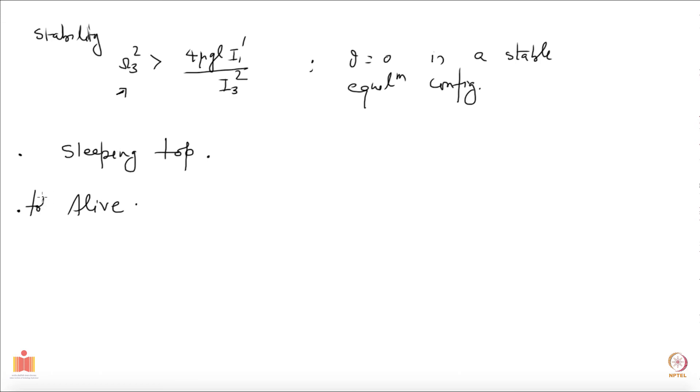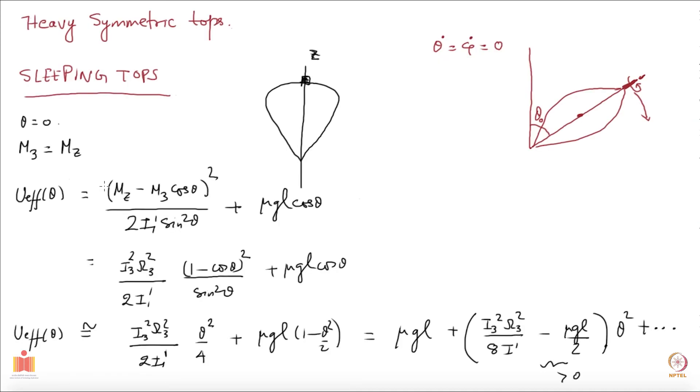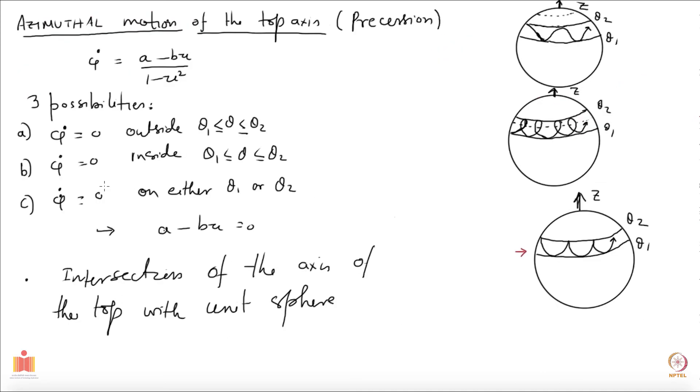Top becomes alive meaning it will no more remain at theta equal to 0, its axis will start doing all the things that we have seen before which we have learned here.